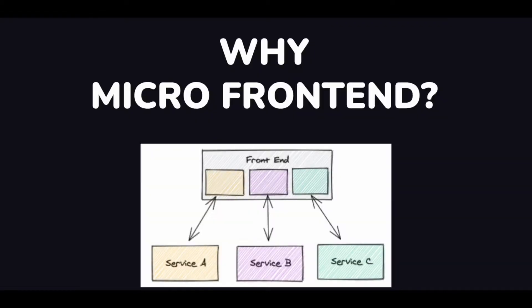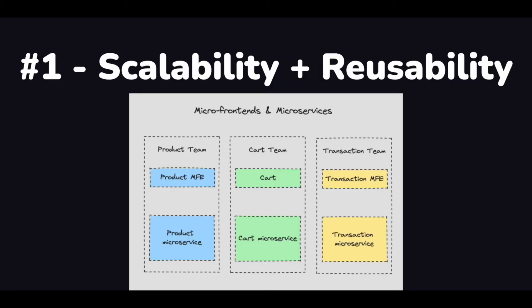Now let's look at why we should use microfrontend architecture. The first reason is scalability and reusability. For scalability, we can divide the application into multiple domains — a product team focused on the product side, a cart team focused on the cart, a transaction team, and so on. Each of those microfrontends are reusable and can be reused in other frontend microservices.